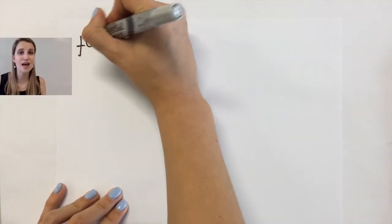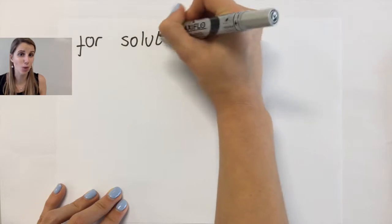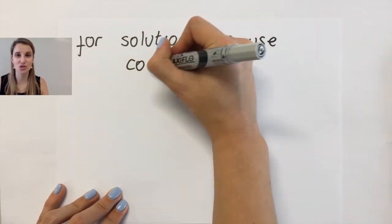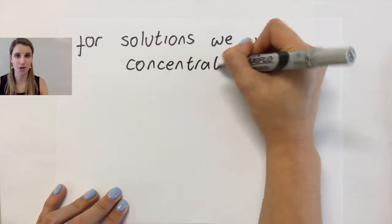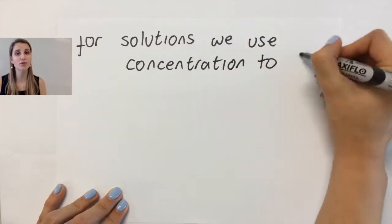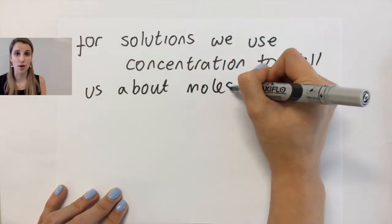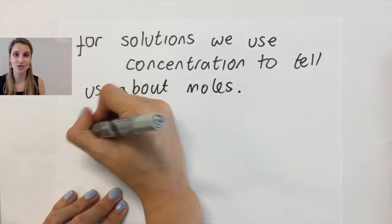With solids we use their mass to tell us about the moles that they contain. With solutions we use their concentrations to give us this information. But first you have to be able to work out the concentration of a solution that you have. So this is the way that we work out the concentration.